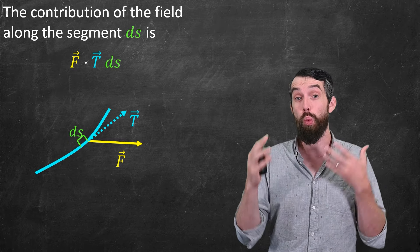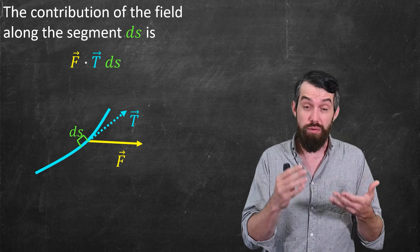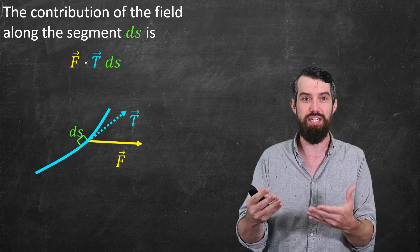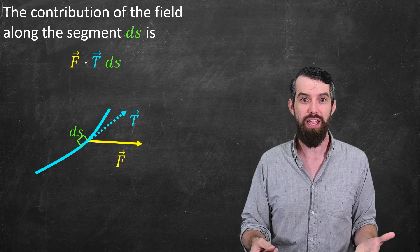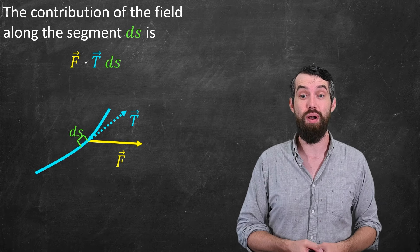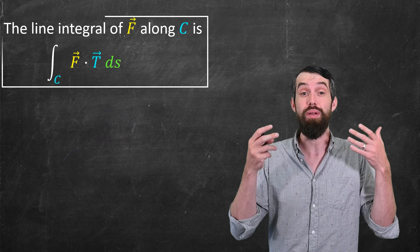If I'm interpreting this as work, then I would say the work done from moving that little ds is this f dot t ds. Finally, I had a much bigger curve, and so if I want to add everything up, I'm just going to integrate it.